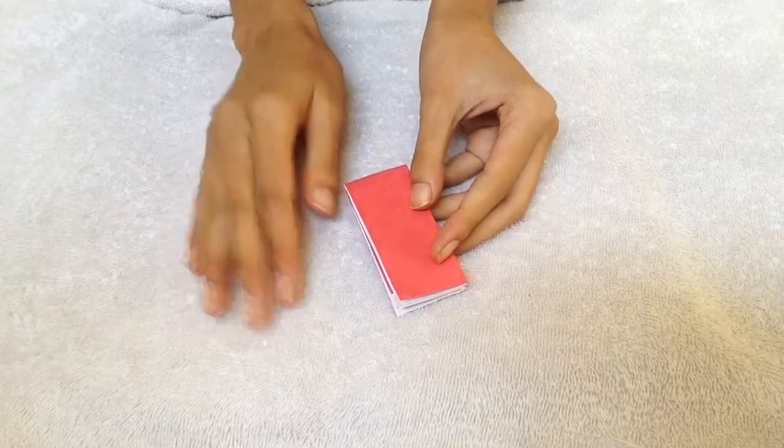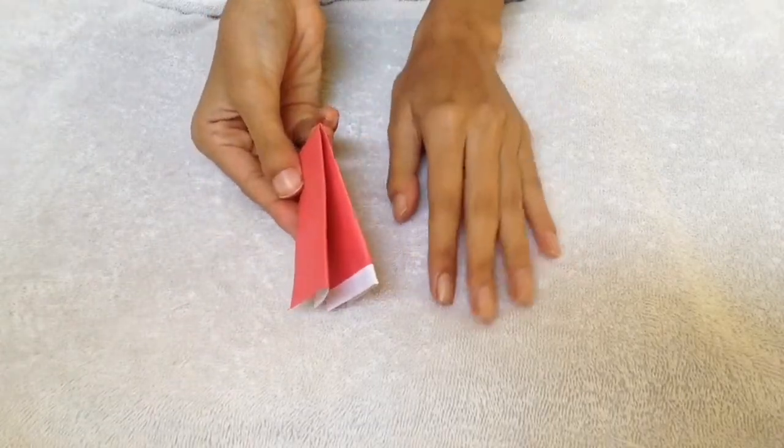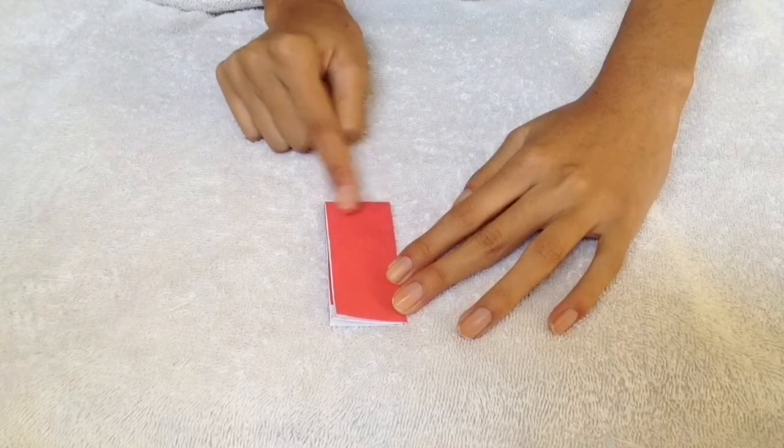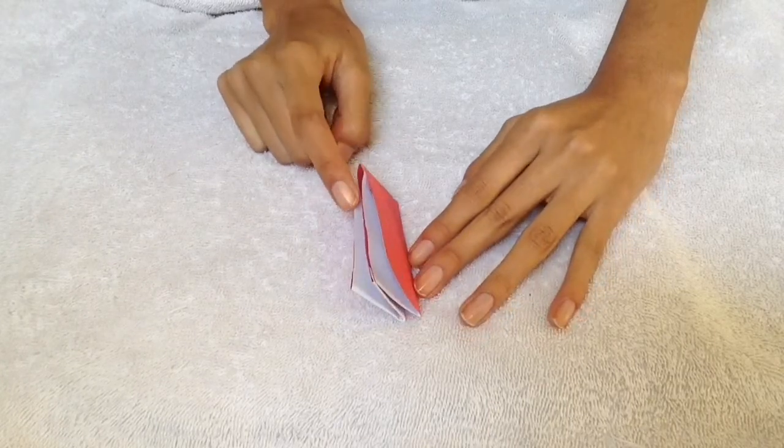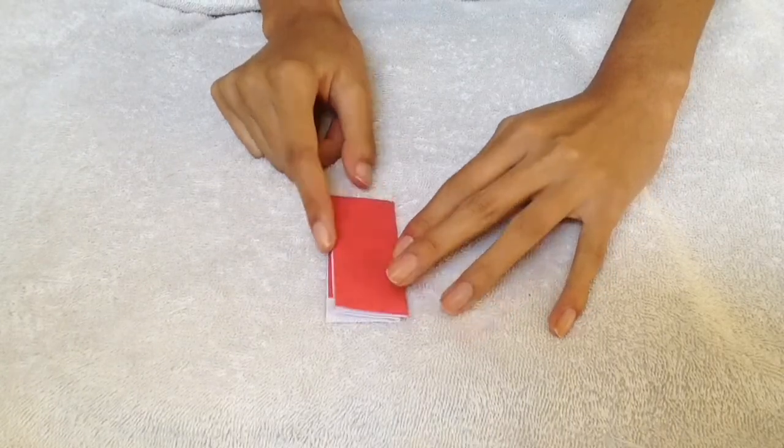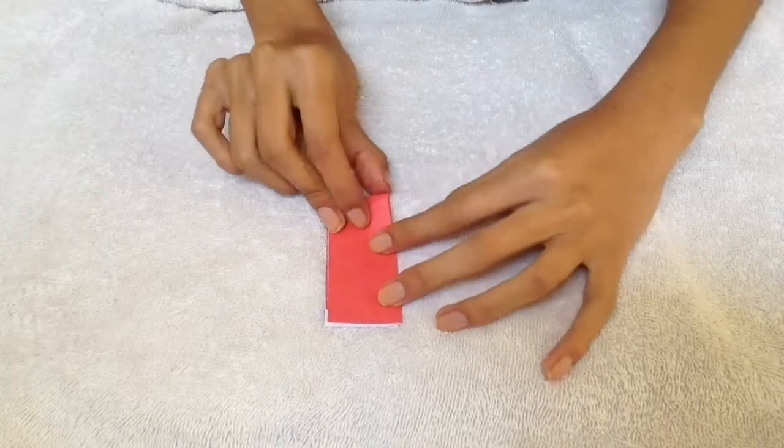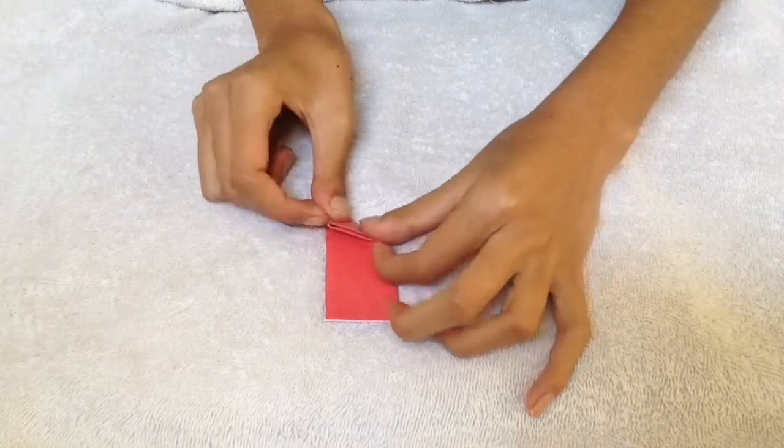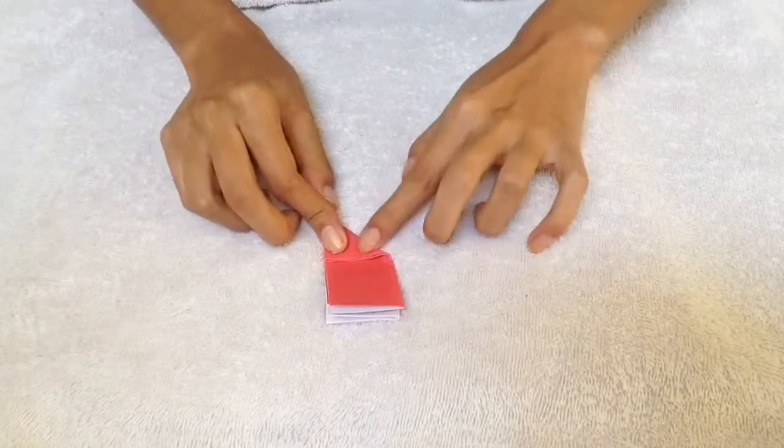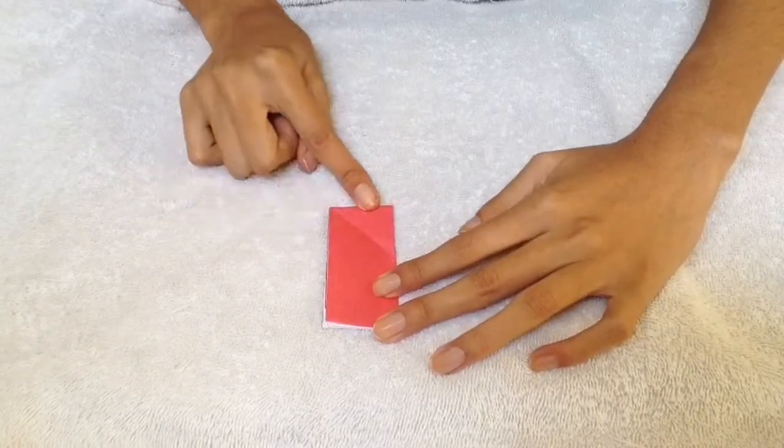Now fold diagonally so that the bottom meets the open tabs on the right and crease. It should look something like this.